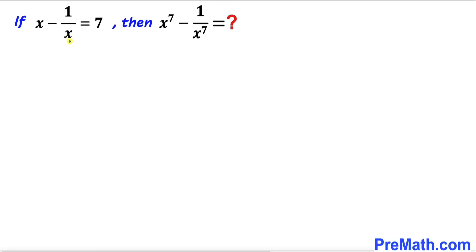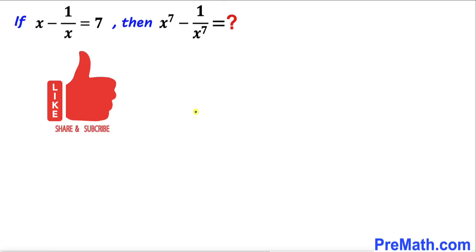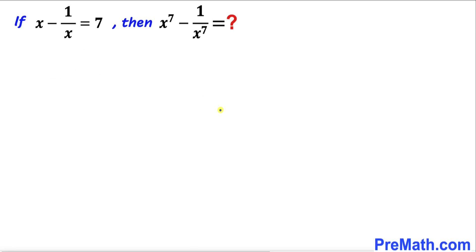Welcome to pre-math. In this video we have x minus 1 over x equals 7, and we are going to find the value of x to the power 7 minus 1 divided by x to the power 7. Let's go ahead and get started with the solution. Let's focus on this equation — I have copied it down here.